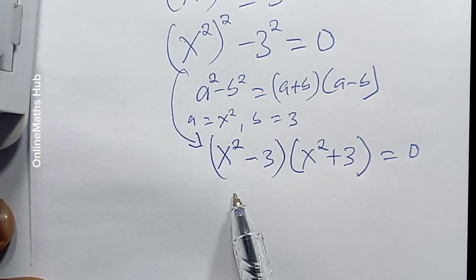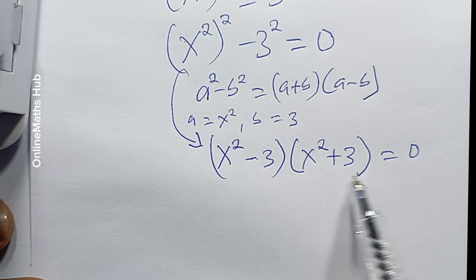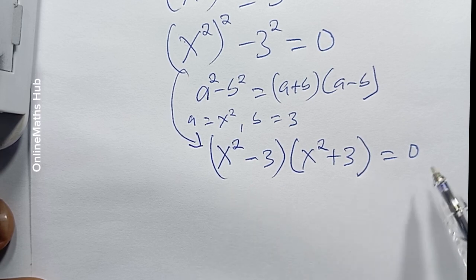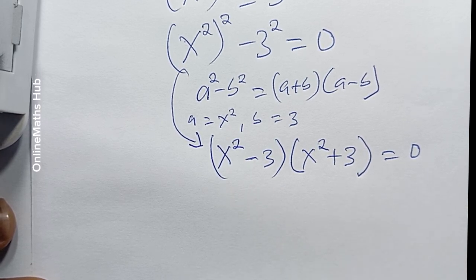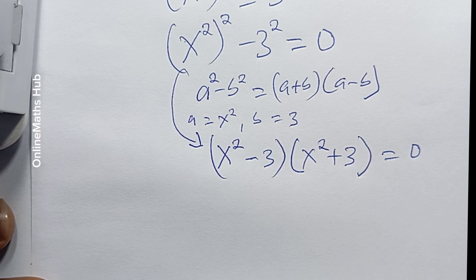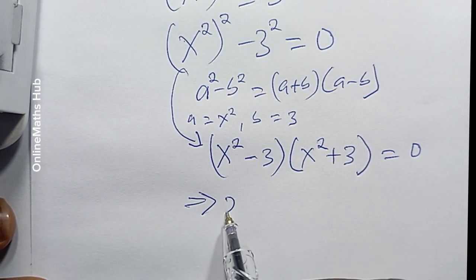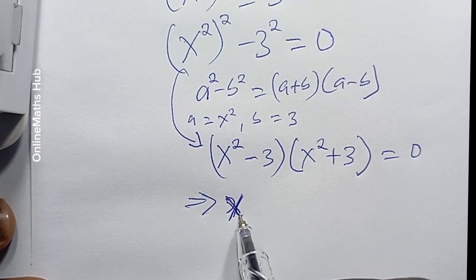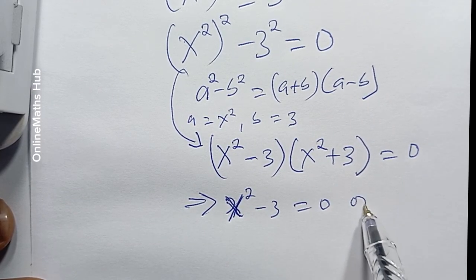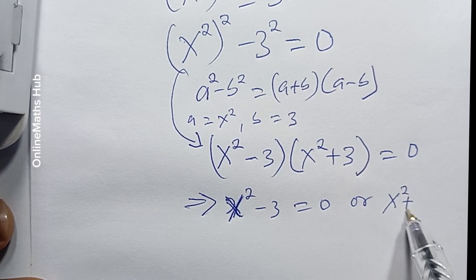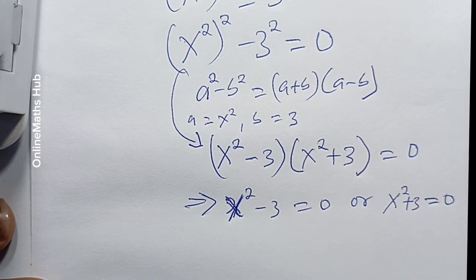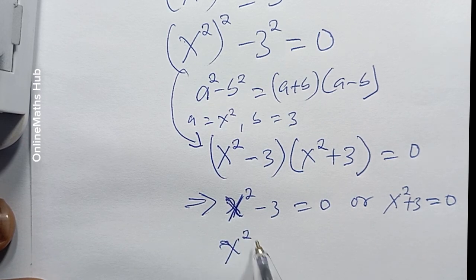I'm going to use the zero product rule, which says that when the product of two or more terms equals 0, it implies that either one of the terms is equal to 0, or all of the terms are equal to 0. So this implies x² − 3 = 0 or x² + 3 = 0.